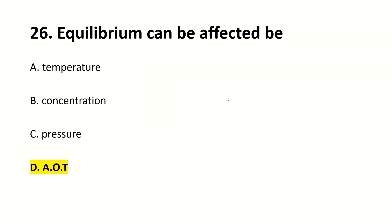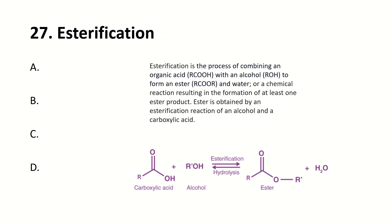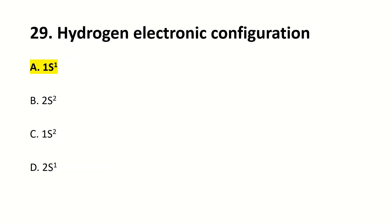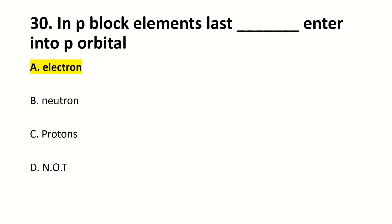Equilibrium can be affected by all of these — temperature, concentration, pressure, and esterification. Electron moves from inner orbit to higher orbit — electron gains energy. Hydrogen electronic configuration is 1s1. In p-block elements, the last electron enters into the p orbital.